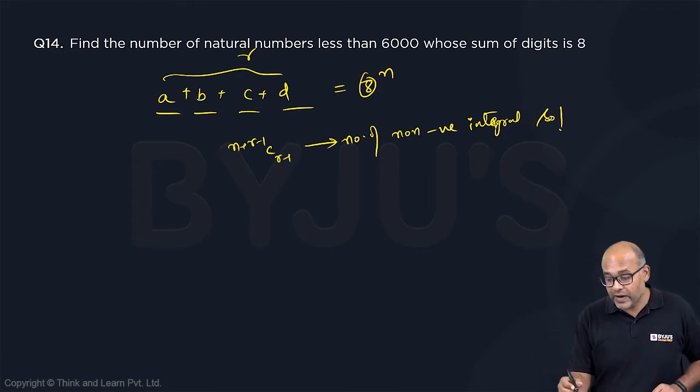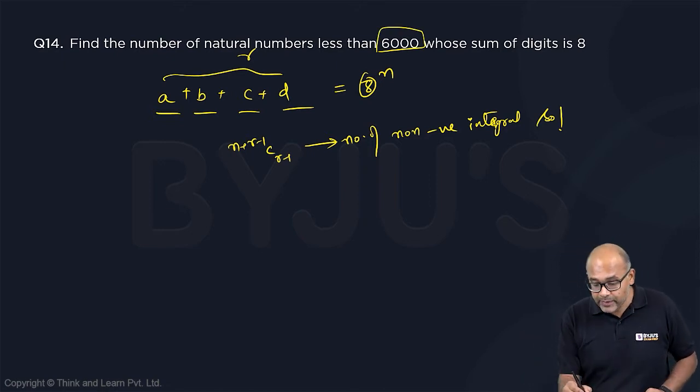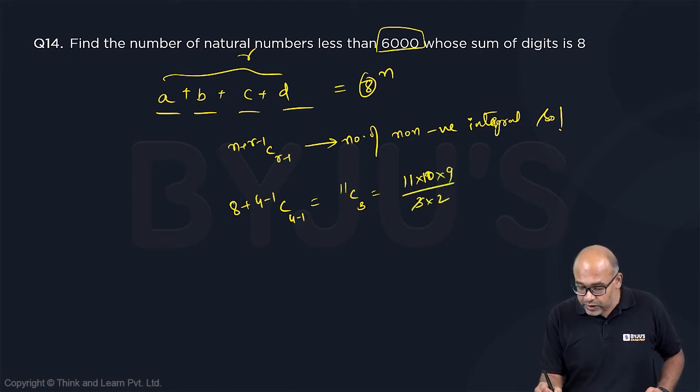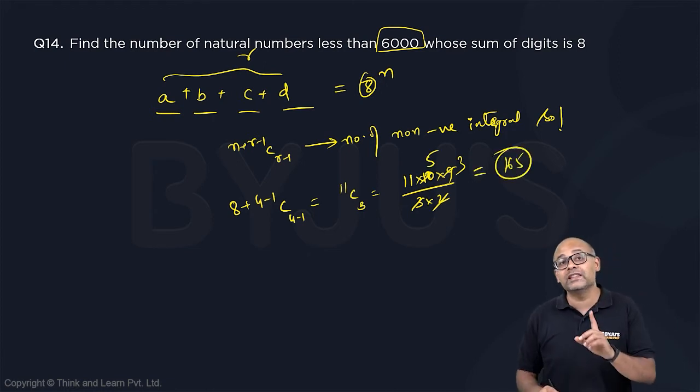So the answer as of now without the condition of the 6000, I didn't put that condition yet. Just adding up to 8 should be 8 plus 4 minus 1 C 4 minus 1, this is 12 minus 1, 11 C 3. 11 C 3 is 11 factorial, so 11 into 10 into 9 by 3 into 2, so 3 goes 3 times, 2 goes 5 times. So 15, 11 is 165.